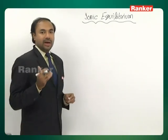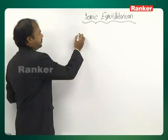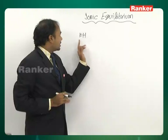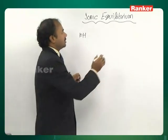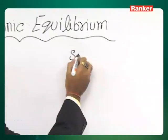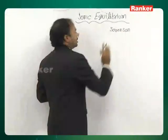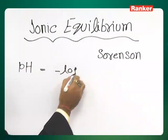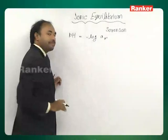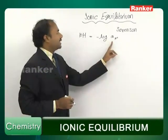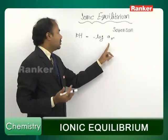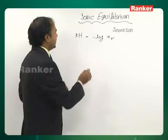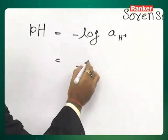The most important concept in ionic equilibrium is pH. This is also called by some as 'power of hydrogen.' The term pH was given by a scientist known as Sørensen. He said that pH is equal to minus log of the activity of H⁺ ions. In the case of dilute solutions, activity can be comfortably taken as equal to the concentration of H⁺ ions, so this formula changes to pH = -log[H⁺].